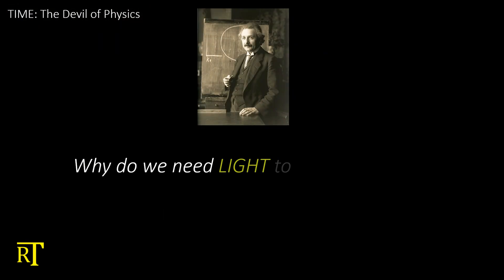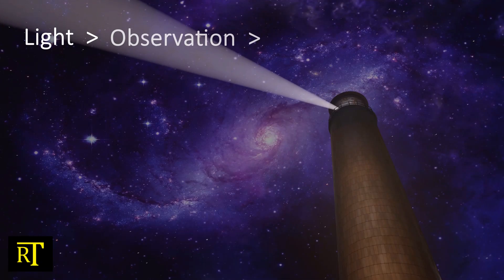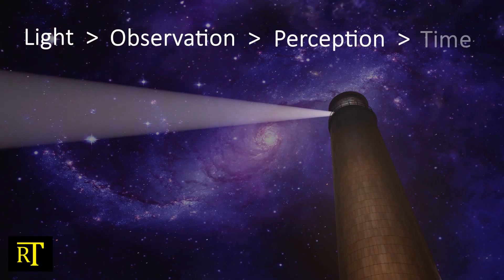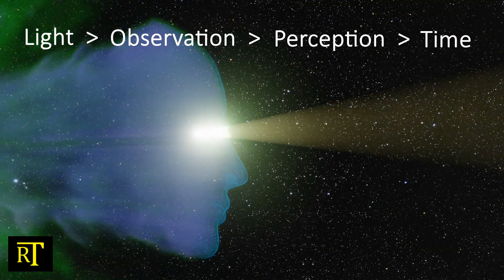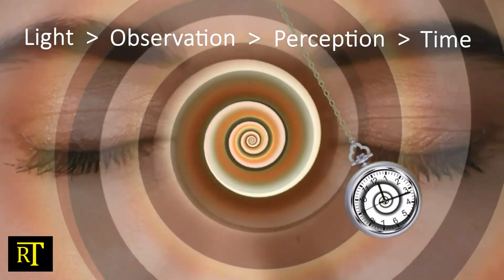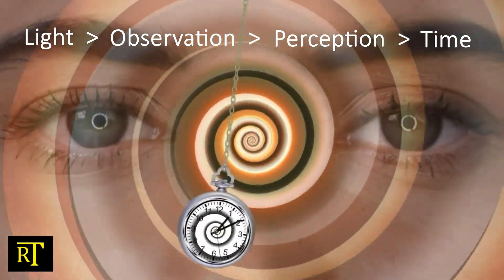One of the questions we will ask is this. Why do we need light to explain time? Light is observation, right? Observation is our sense of perception. Does this mean time is nothing but a perception? We will investigate this to see if it makes any sense.